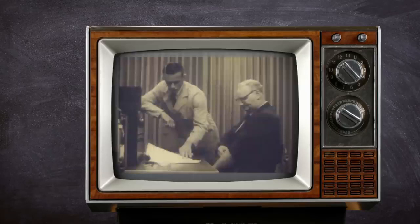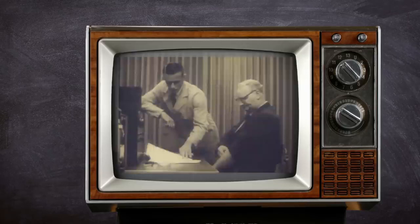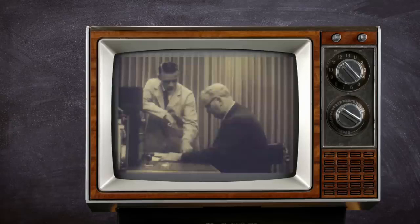This meant that the whole experience of the teacher was controlled, from the authority of the experimenter to the reaction of the learner. To ramp things up in later versions of the study, the learner would also shout out in pain when the voltage got too high.